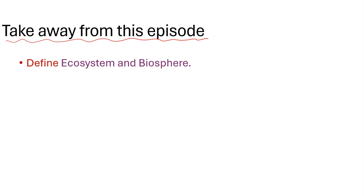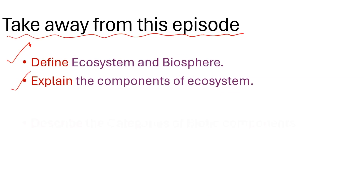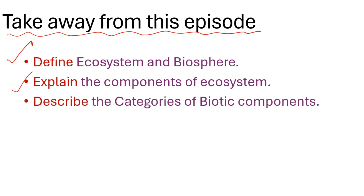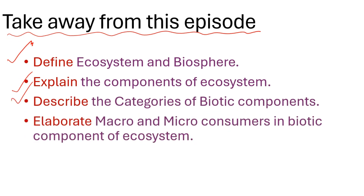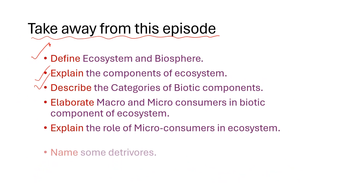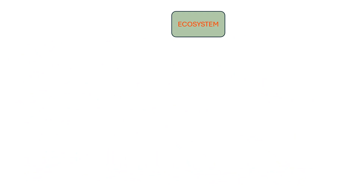So, what did we learn from this episode? By now, you should be able to define ecosystem, explain the components of ecosystem, describe the role of saprotrophs, and name some of the detritivores. The classification of components and subcomponents of the ecosystem can be represented like this.